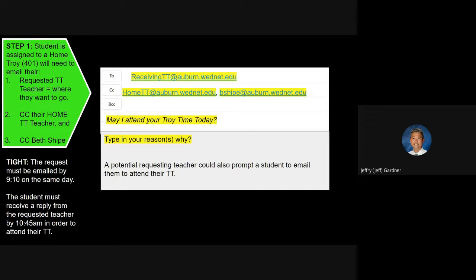In the subject line, you're going to say: 'May I attend your Troy time today?' Remember, you're sending this to the receiving or requested teacher. You then can type in your reason why. Your teacher may already know - in fact, your teacher may have already prompted you in class that same day or the day before to do this, because some teachers are going to want you to be there. Here's the tight deadline: the request must be emailed by the student by 9:10 on the same day. You got to get it in that morning.